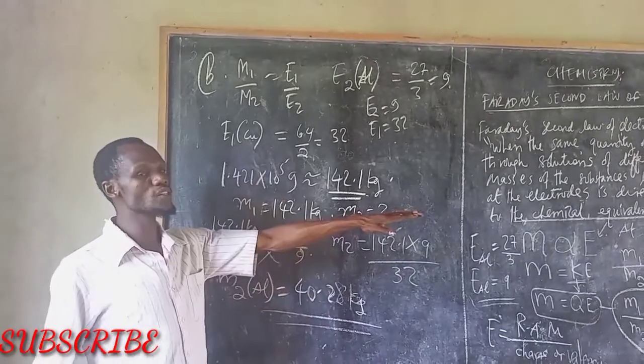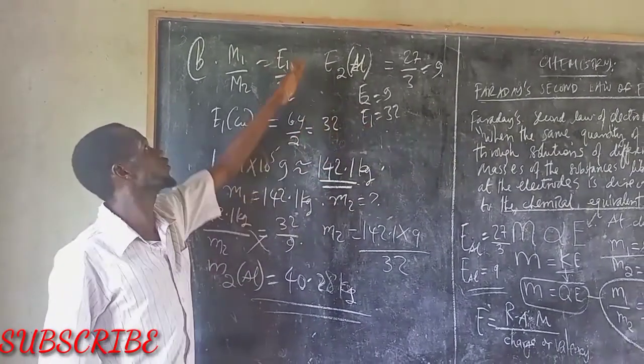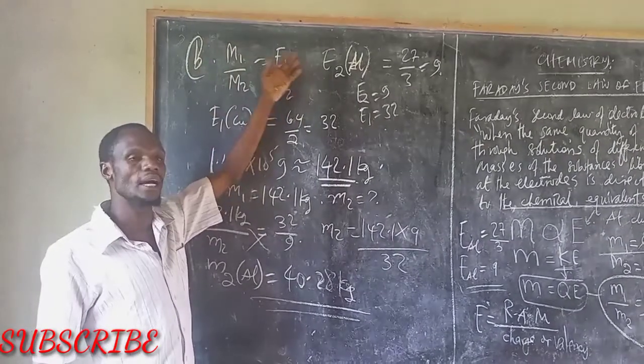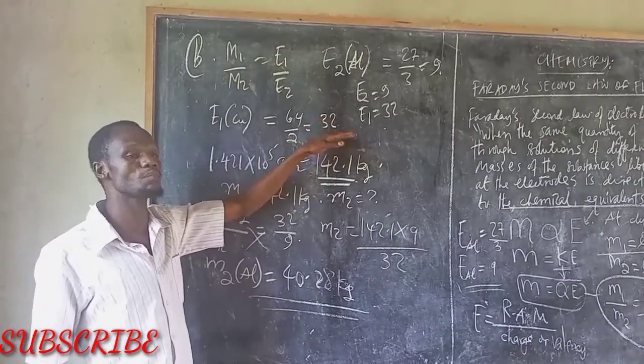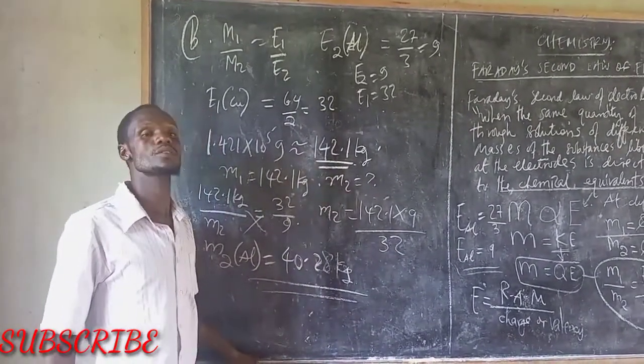The first question is about copper only. The second is all about copper and aluminum, so you use the second law of electrolysis. So this is the end of what we call the second law of electrolysis.